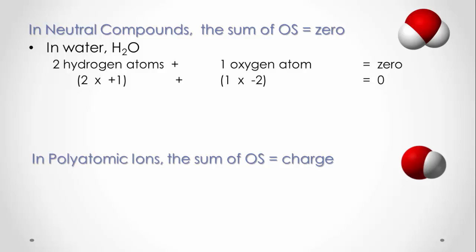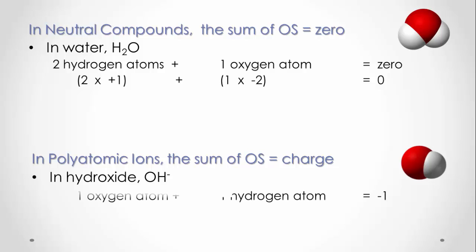Rule six applies to polyatomic ions — ions with multiple types of atoms. The sum of all the oxidation states of atoms in that ion adds to give the charge on the ion. Using the hydroxide ion as an example: one oxygen atom with an oxidation state of negative two and one hydrogen atom with an oxidation state of positive one add to give the charge of negative one.